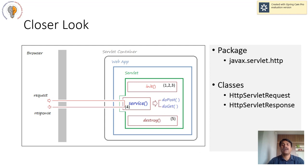In a closer look, you will find that the browser is where the user works and submits data as a request to an application server. The application server works on that request and provides the response. Request and response are two important mechanisms. The same request and response are utilized in Java Server Pages also. Whenever the servlet container gets loaded, the web application loads the servlet class, gets initialization — steps one, two, three — then service takes the data as a request and provides the response, dynamically generating content for the user.